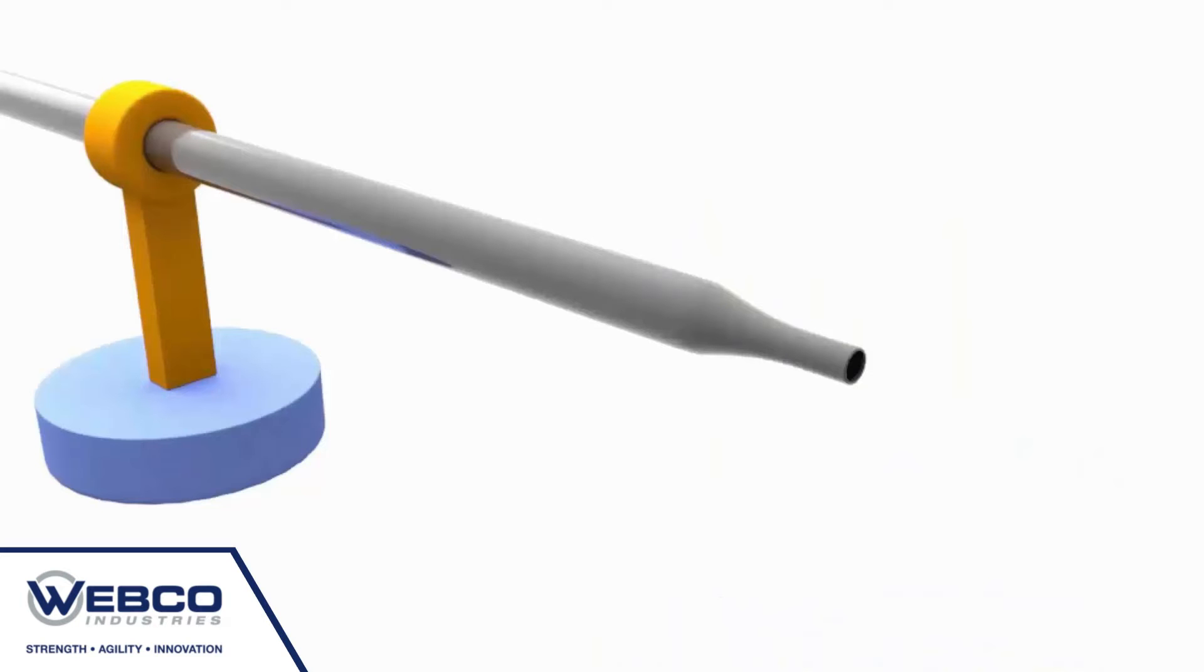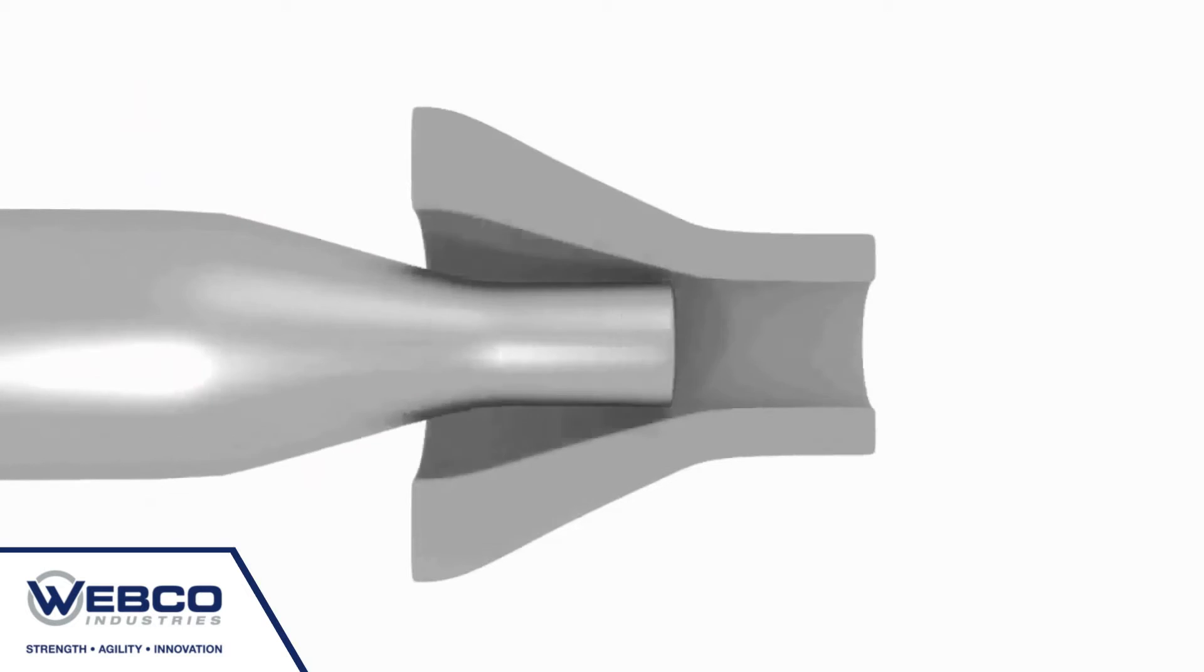Next, one end of the tube is pointed. The point is necessary so the tube can pass into and through the die on the draw bench.